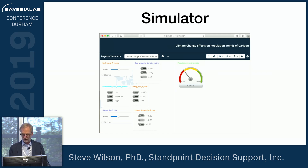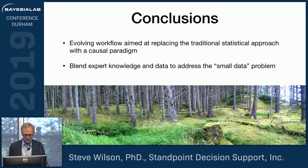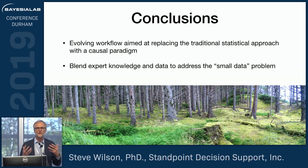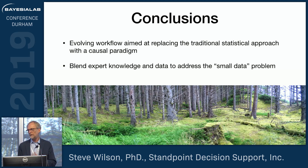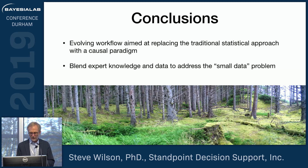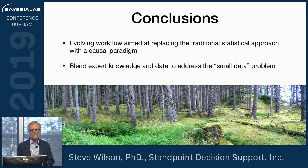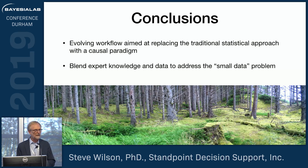That's about all I wanted to cover. A couple of conclusions — or maybe more of a call to arms. This idea that we need some sort of evolving workflow that can replace the traditional statistics workflow, aimed at formalizing this causal paradigm, because it's one of the weakest things we're dealing with in traditional statistics and one of the greatest benefits we can bring to a lot of different areas. And the second thing is this idea of blending expert knowledge and data to address the small data problem — that's not new to Bayesian networks, but there are some decisions in there, especially in the handling of the expert data and setting these things up for success, that I'm certainly still thinking about. I'm hoping we can have some conversations about that over the next couple of days. Thanks very much, and I'm happy to answer any questions.